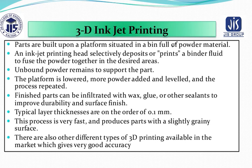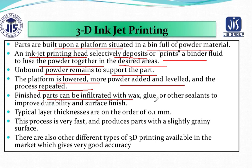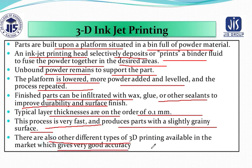3D inkjet printing: parts are built upon a platform situated in a bin full of powder material. An inkjet printer head selectively deposits or prints a binder fluid to fuse the powder together in the desired area. Unbound powder material remains to support the parts. The platform is lowered, more powder is added and leveled, and the process is repeated. Finished parts can be infiltrated with wax, glue, or any sealant to improve durability and surface finish. Typically, layer thickness is in the order of 0.1 mm and this process is very fast, producing parts with a slightly grainy surface.